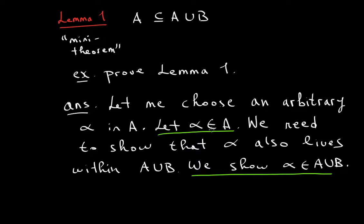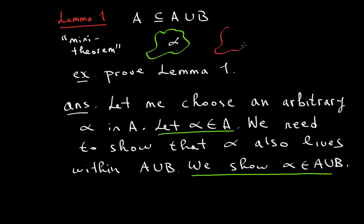Let alpha be an element of A. Our goal is to show that if this is A union B, then alpha is also an element of this set.